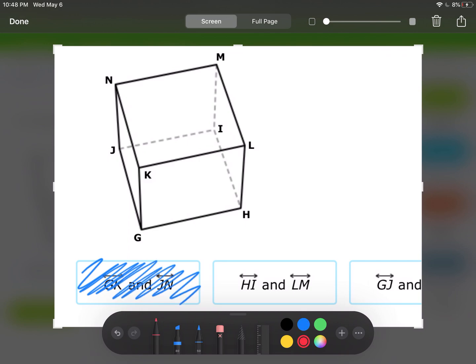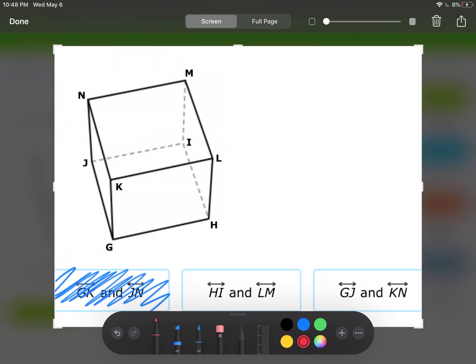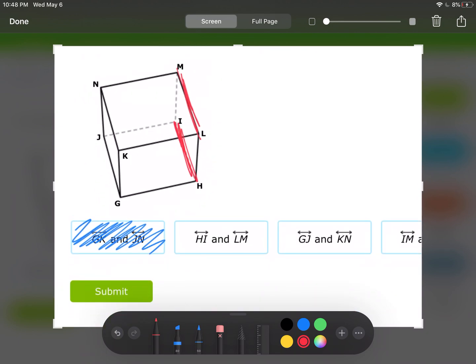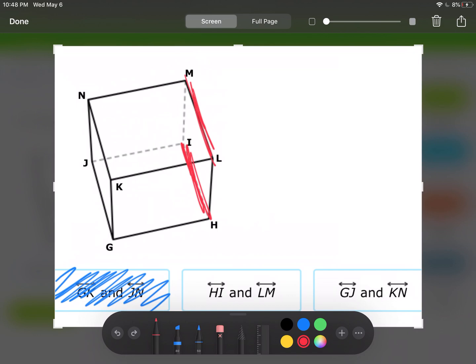Let me try the next one. It says HI and LM. Again, notice that those two lines are on the same plane and they're parallel. So that means that these are not skew, following the same reasoning from last time.